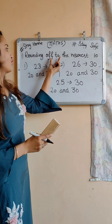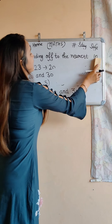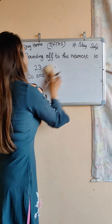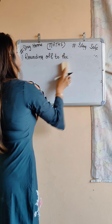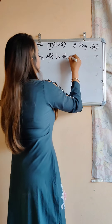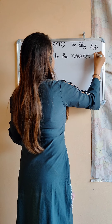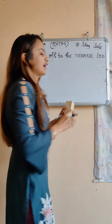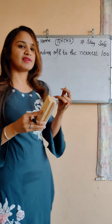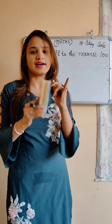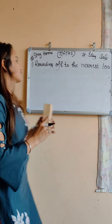So this is our rounding off to the nearest 10. Now next we will do rounding off to the nearest 100. Again, in this first we will find those two 100s between which our given number lies. Let us take an example.